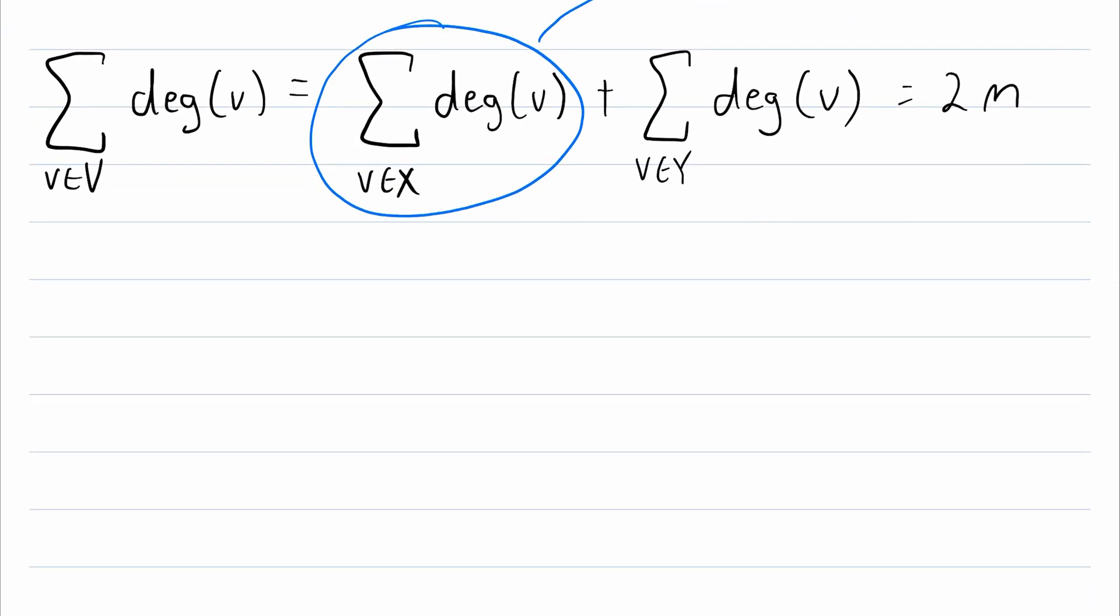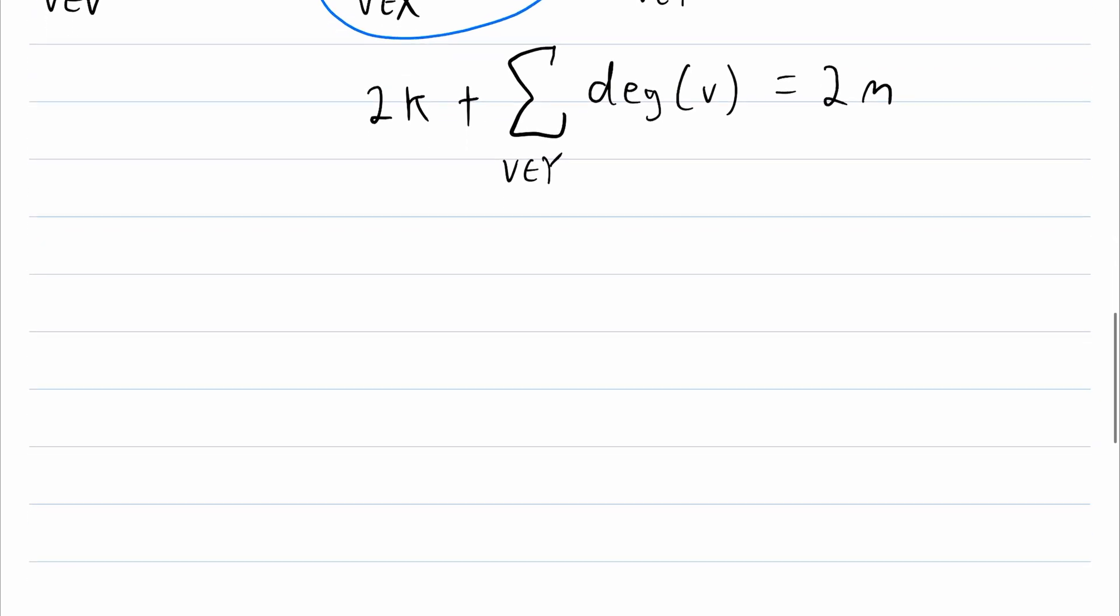We can rewrite this equation as 2K plus the sum of all of the odd degrees is equal to 2 times M. Then, to really learn about the sum of odd degrees, we want to get it by itself. So, let's subtract 2K from both sides. That gives us that the sum of all of the odd degrees is equal to 2 times M minus 2 times K. And, we can factor 2 out of this. That would give us 2 multiplied by M minus K.